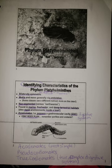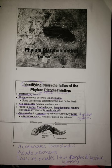They are found in marine, freshwater, and damp terrestrial habitats — also moist environments — inside a host. They are acoelomates. They possess a gastrovascular cavity; in other words, they have a sac body plan, very much like Porifera and Cnidaria.